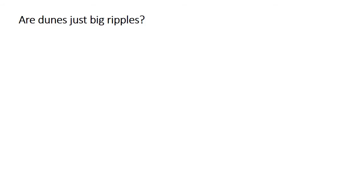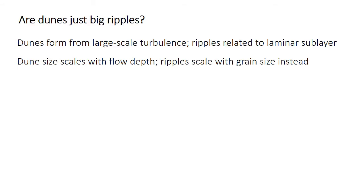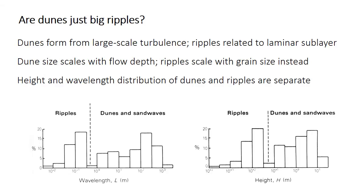Are dunes just ripples that get really big? Despite their similarities, dunes and ripples form in fundamentally different ways. Dunes form from large-scale turbulence in the turbulent sublayer of the boundary layer, while ripples are related to variations within the laminar sublayer. The two bedforms also scale differently: the size and spacing of dunes is related to the flow depth and both increase as the flow gets deeper, but ripple size is independent of flow depth — instead, ripples get bigger when the grain size gets bigger. There also appear to be two distinct peaks in the distribution of height or spacing, one at smaller sizes for ripples and a broader peak at larger sizes for dunes.